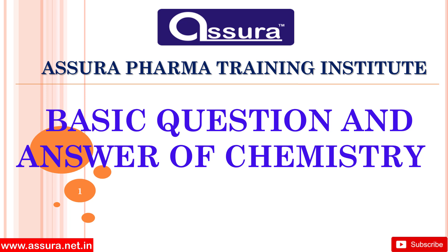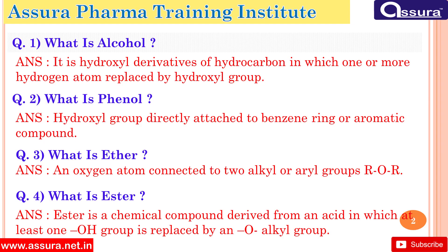What is alcohol? It is a hydroxyl derivative of hydrocarbons in which one or more hydrogen atoms are replaced by a hydroxyl group. What is phenol? A hydroxyl group directly attached to a benzene ring or aromatic compound. What is ether? An oxygen atom connected to two alkyl or aryl groups, represented as R-O-R.